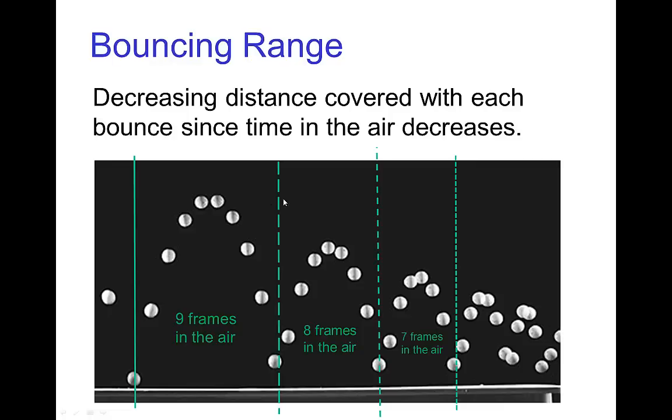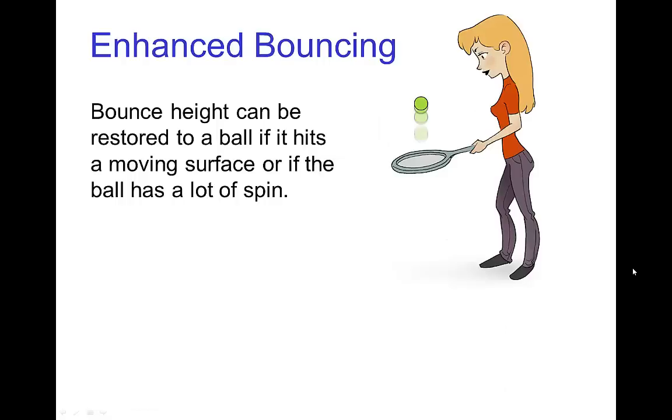The horizontal spacings are mostly staying the same. Now, we can preserve bounce height in a variety of ways. If we have a moving surface, like someone bouncing the ball off of a tennis racket that they're hitting the ball up, then it can preserve height.